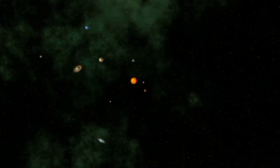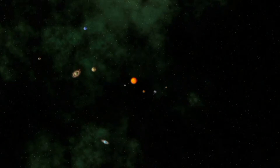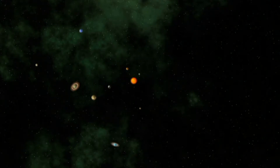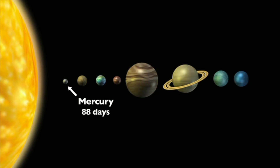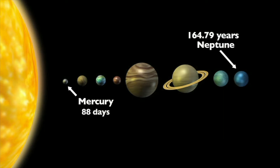Different planets in our solar system travel different distances around the sun. Some of them, like Mercury, have shorter distances to travel. It takes Mercury 88 days to make one revolution, while others, like Neptune, have farther to go. It takes Neptune 164.79 Earth years to make one trip around the sun.